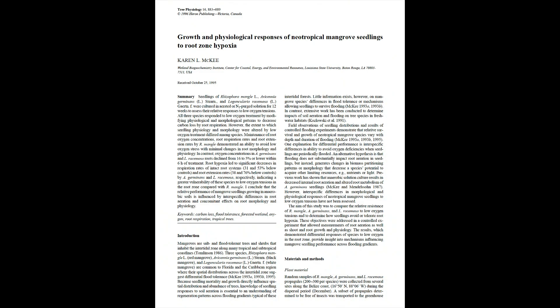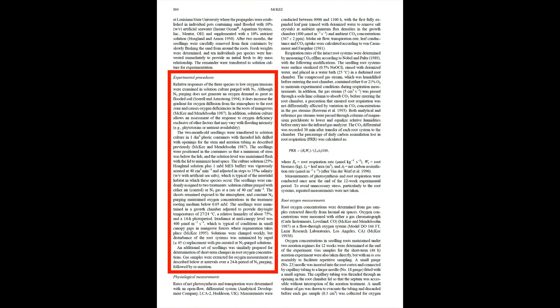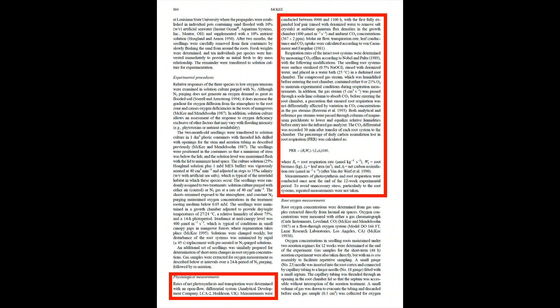Let's look at an example. In this paper on plant flood tolerance, I described how tree seedlings responded to low oxygen concentrations in the root zone. In the methods, I first described in detail the plant material used in the study, where seedlings were collected, and how they were handled prior to and during experimentation. Next, I described the experimental procedures used to measure relative responses of three species to low oxygen tensions in solution culture. There was also information about the general growing conditions in the growth chamber used in the study. The next subsection described the physiological measurements, including net photosynthesis and transpiration, as well as root respiration. Notice that these descriptions included precautions that were taken to ensure consistency and to avoid spurious responses.